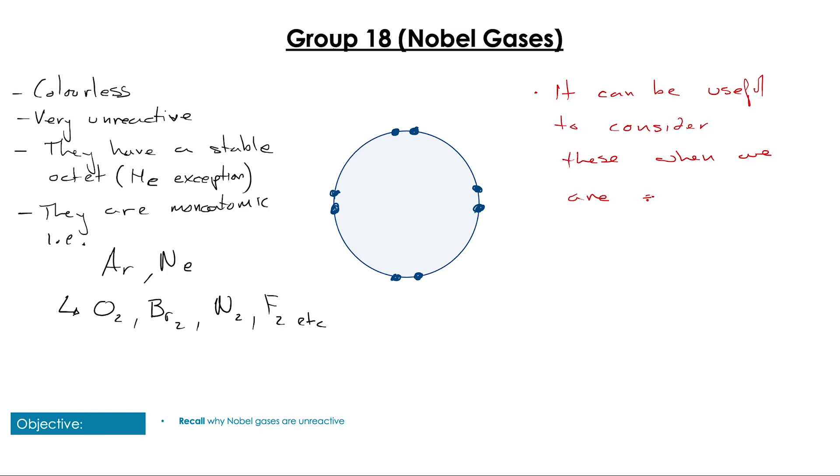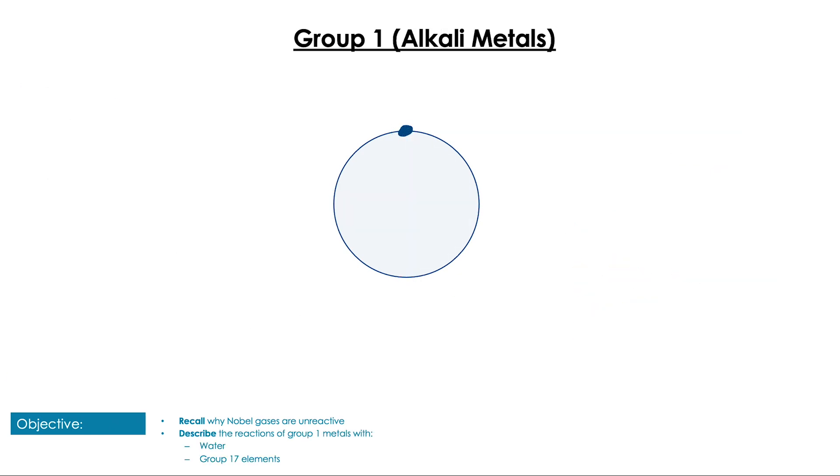If we look at alkali metals, Group 1, they only have one electron in the outer shell - lithium, sodium, potassium, etc. These elements are too reactive to be found in nature by themselves; they're only found in compounds.